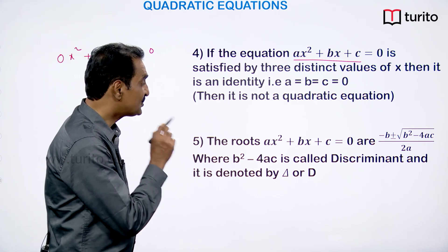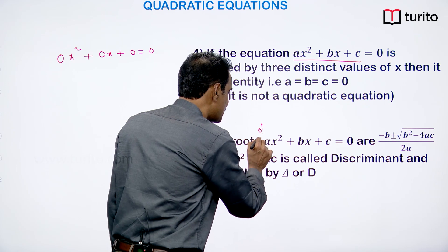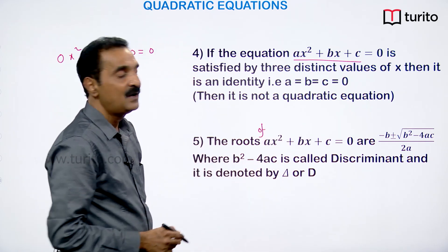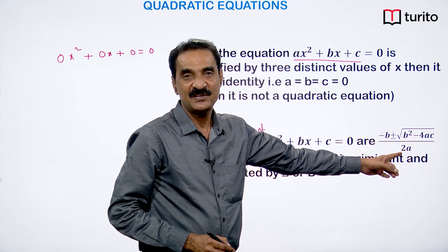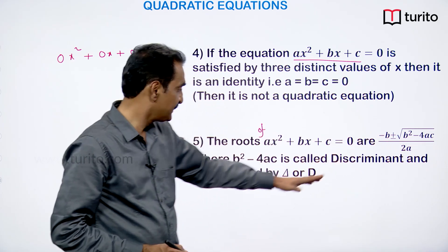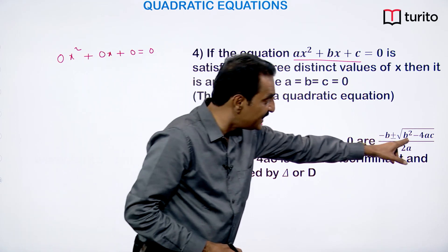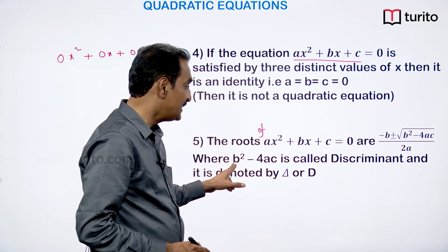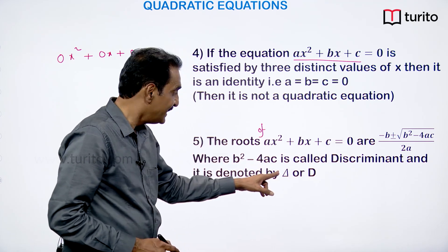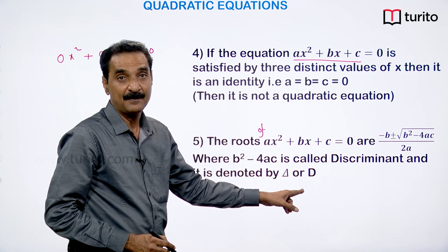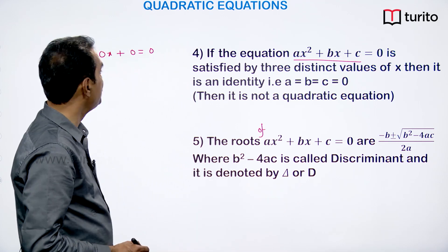The roots of ax² + bx + c = 0 are given by (−b ± √(b² − 4ac)) / 2a. The expression b² − 4ac is called the discriminant of the quadratic equation, denoted by Δ or D.